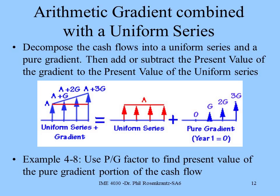Sometimes, however, we have a gradient combined with the uniform series. What we do in that case is decompose the cash flow into a uniform series and a pure gradient. We can calculate the present value of each of those and then add those together to get the present value of that series of cash flows. So we're going to look at example 4.8 just to show you what that looks like. I'm not going to go through it in great detail. You can go through it yourself later on.